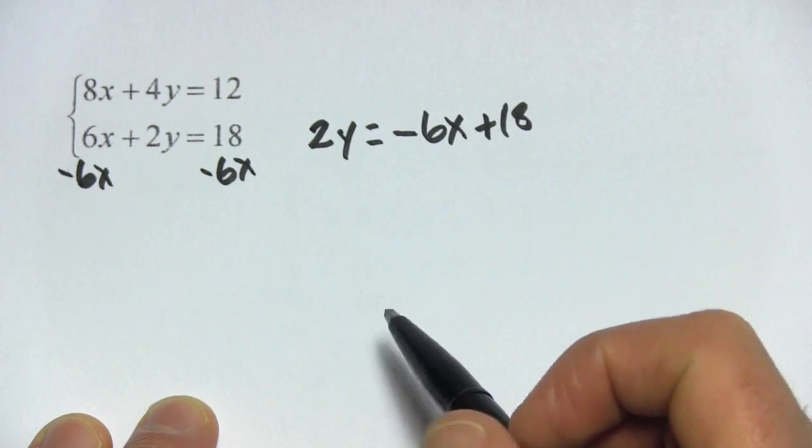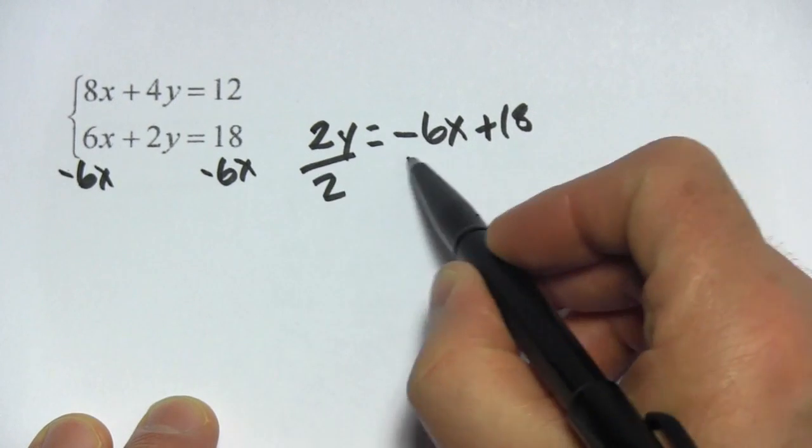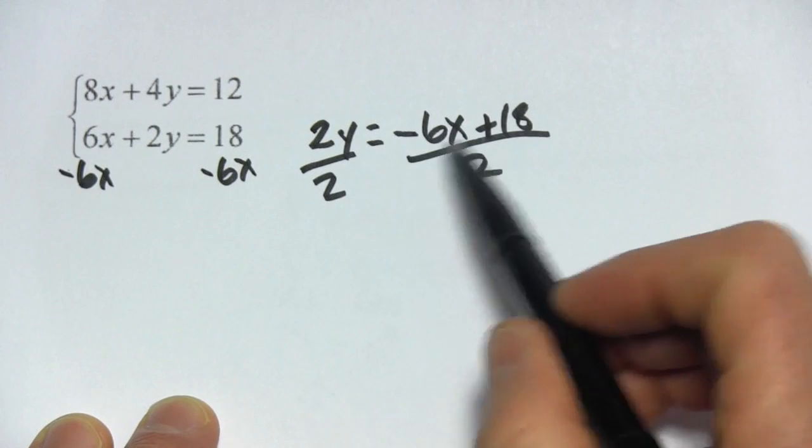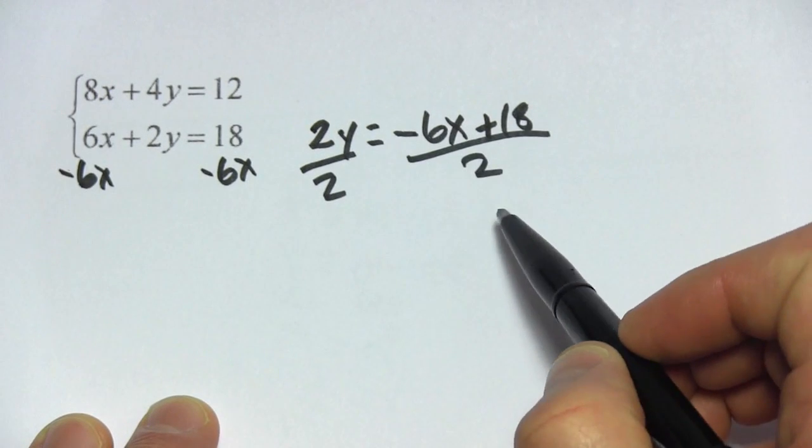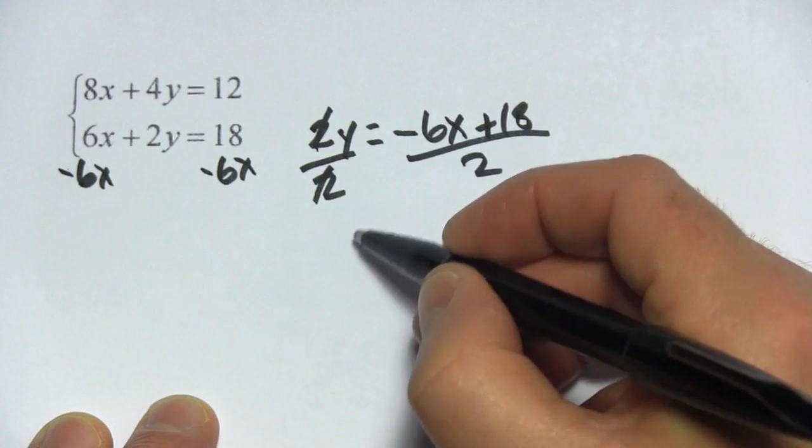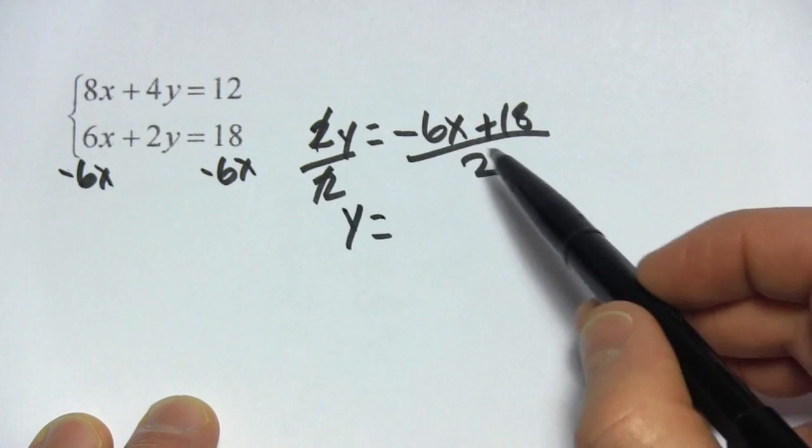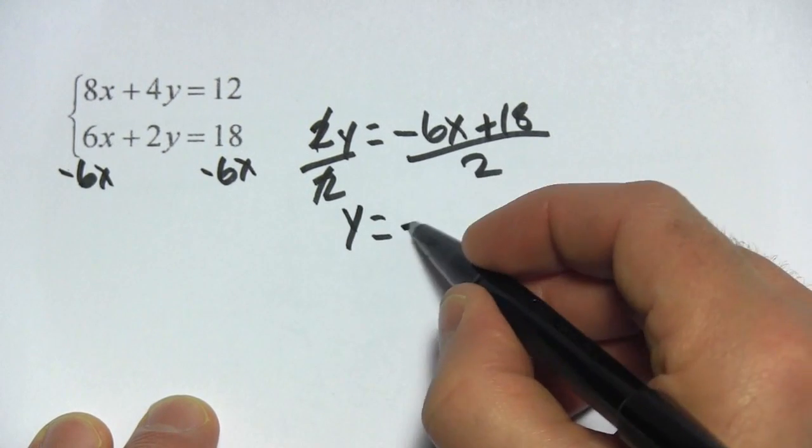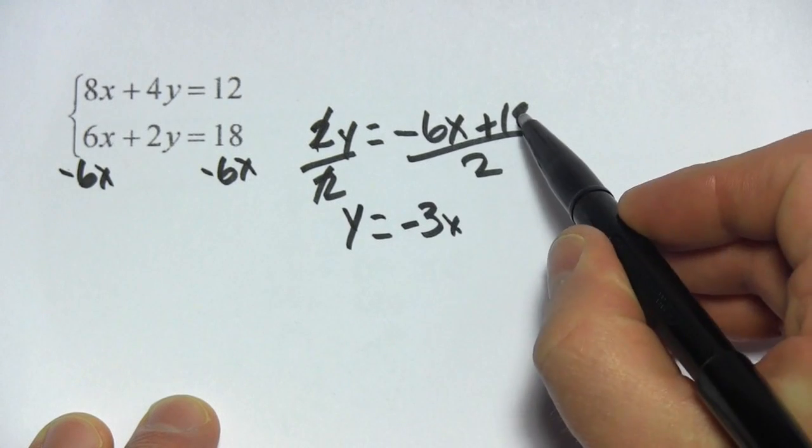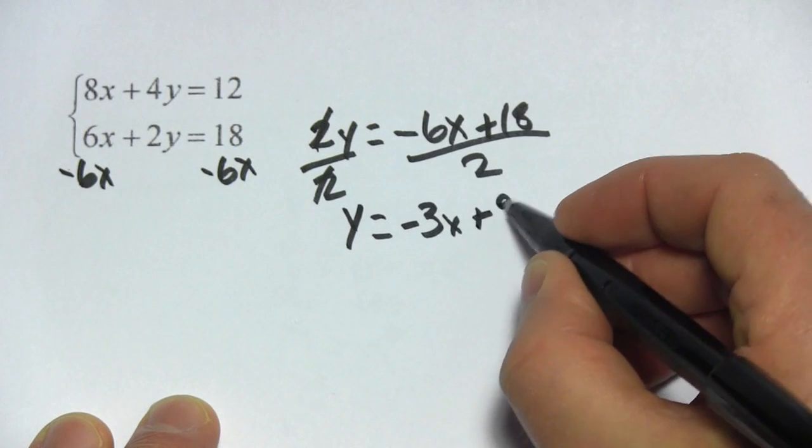And then y is not solved yet, we have to divide by 2. Remember when you do that, you have to divide everything on that other side by 2. Here, the 2's cancel, we just get y. Negative 6x divided by 2, that's going to be a negative 3x, and 18 divided by 2 is going to be a 9.